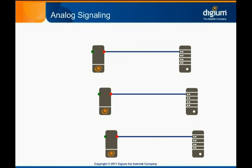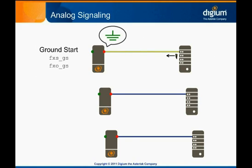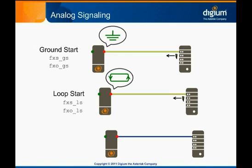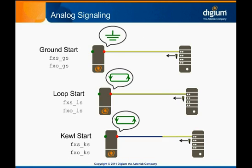We've looked at the physical connections that make up an analog circuit, as well as the different port types. We also need to discuss the electrical signaling used for actions such as requesting dial tone and indicating when a call has been hung up. Asterisk recognizes three types of analog signaling. The least common is ground start, where dial tone is requested by briefly grounding one of the leads. Much more common is the loop start signaling method, where dial tone is requested by completing a circuit so that there is a current loop through the phone. The third type of signaling, called Kool start, is loop start with the added feature of disconnect supervision.